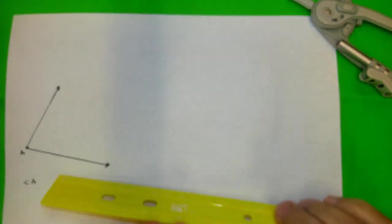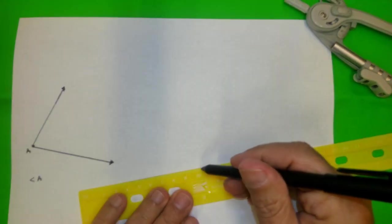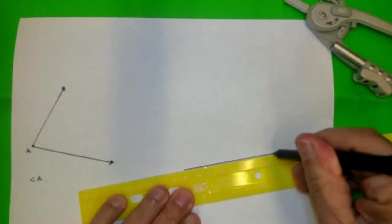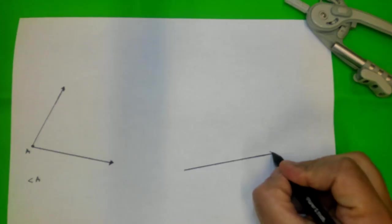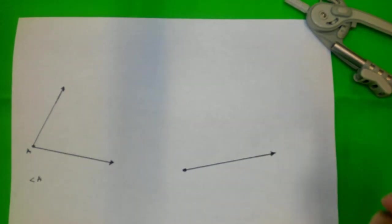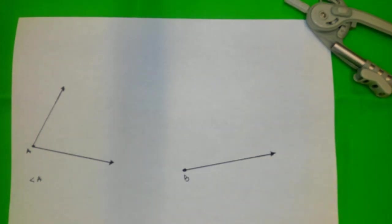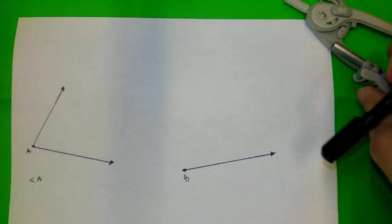And also, I'm going to draw another ray here. Let's call this point B. And now, let's start the construction.